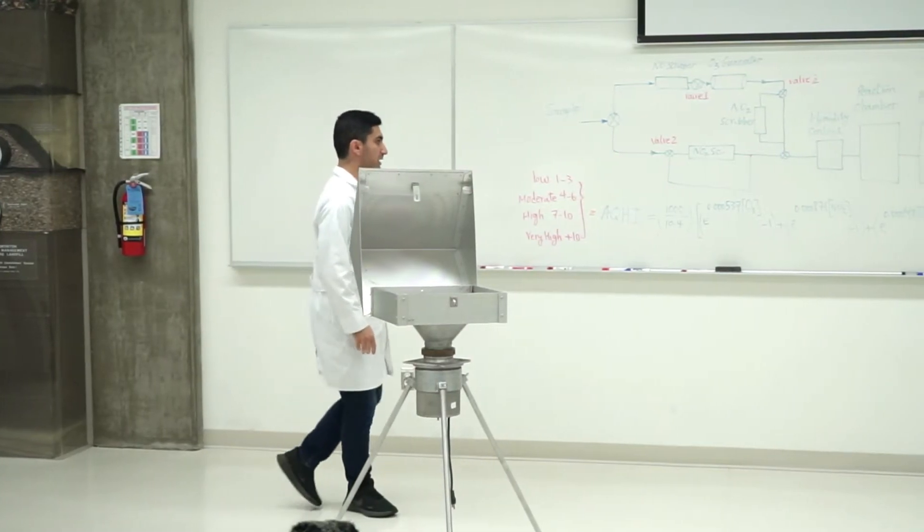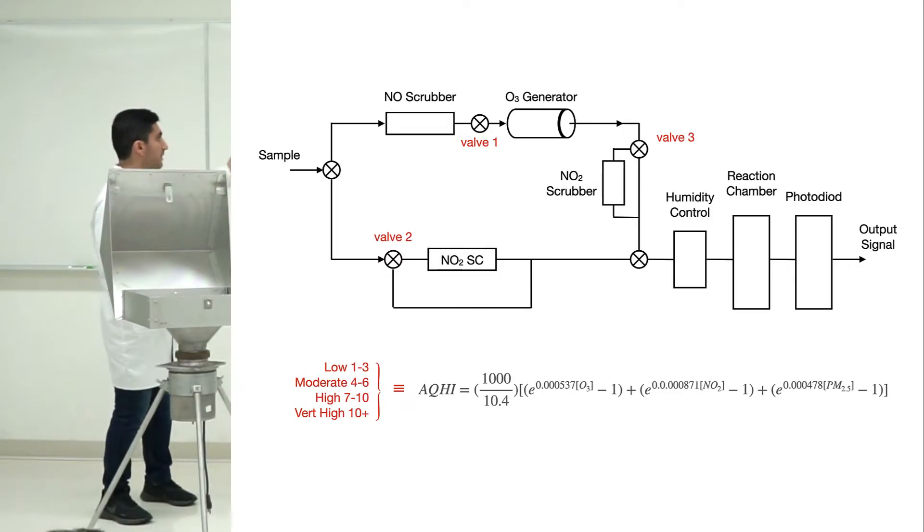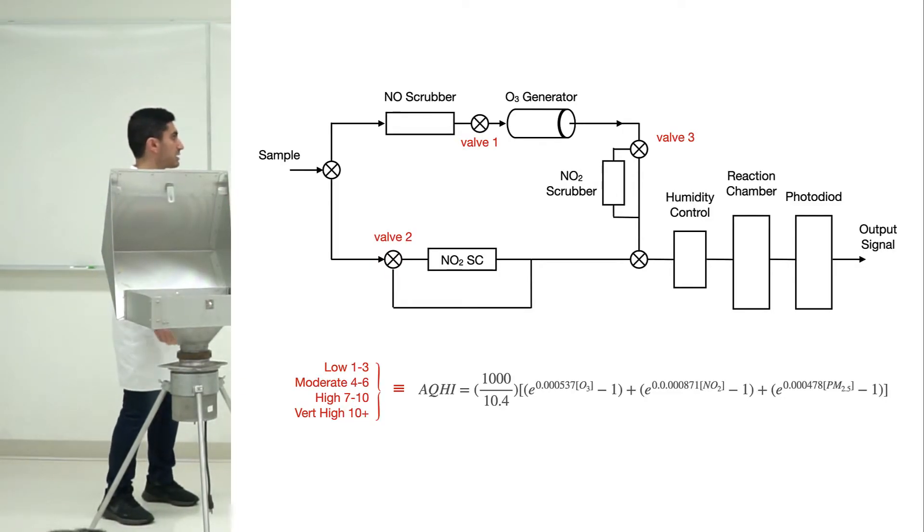To measure ozone and nitrogen dioxide, we use a device whose schematic is plotted here. It takes a sample and divides it into two sections.